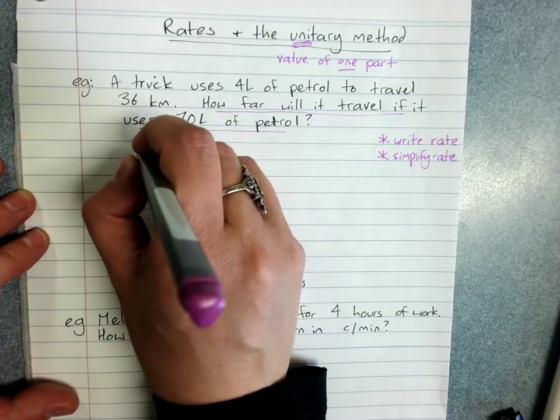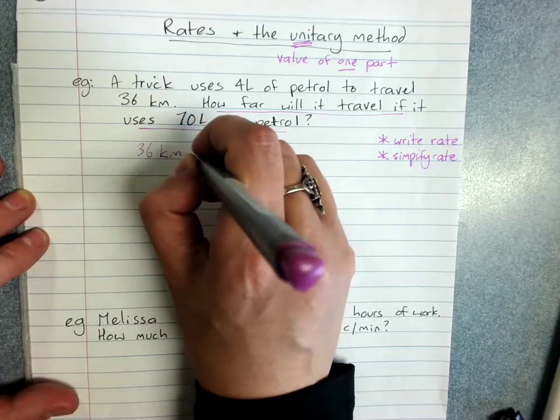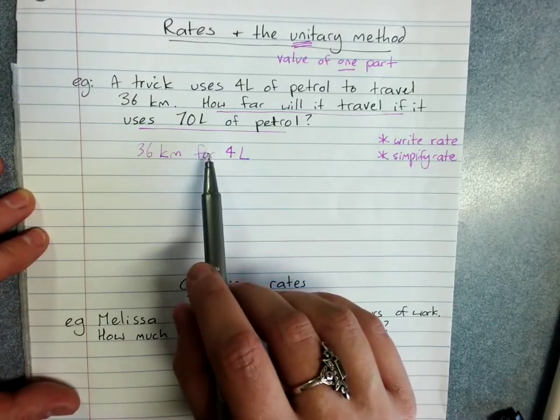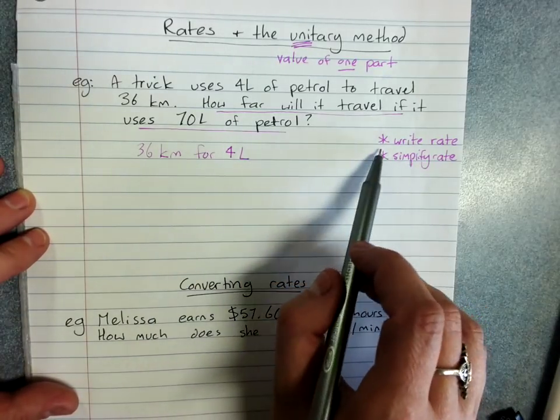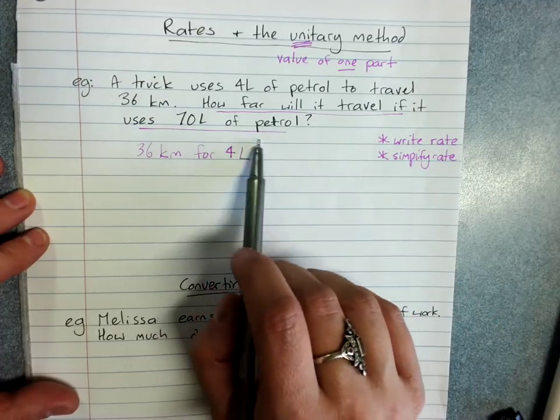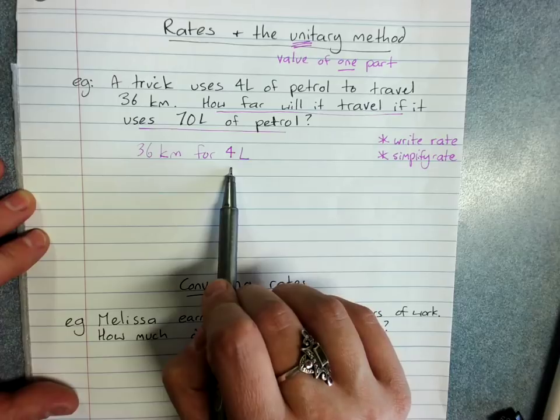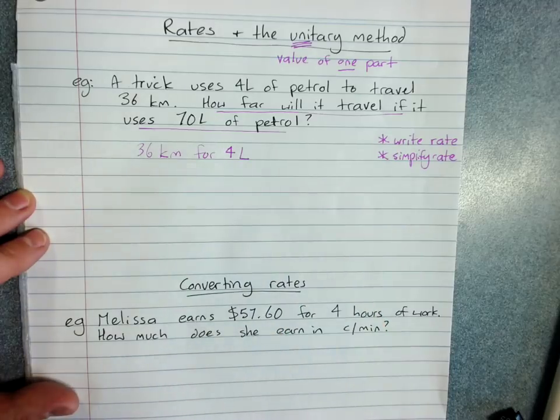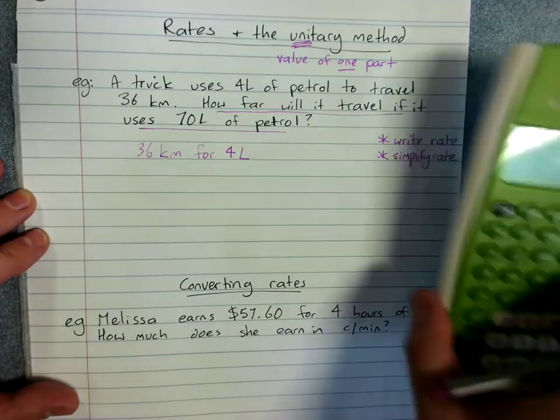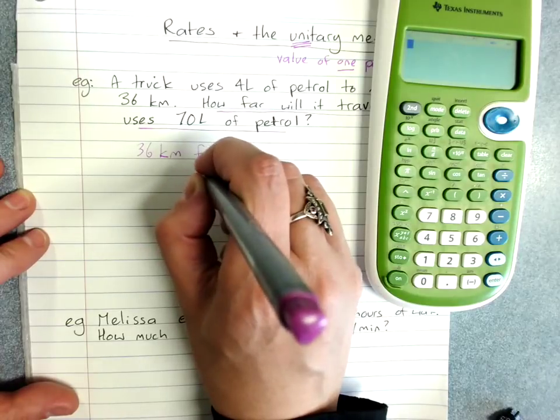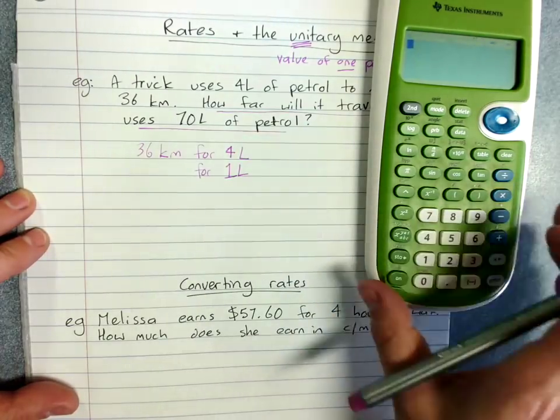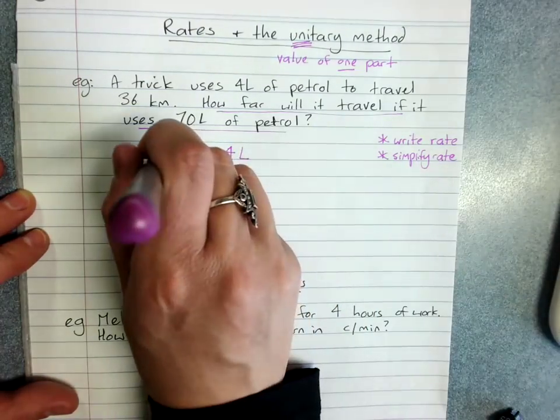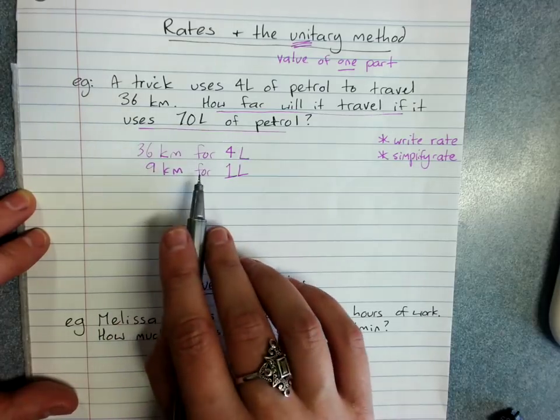So my rate is 36 kilometers for 4 liters. You write your rate and you simplify your rate because I want to get down to one liter and how far that is. So of course to simplify your rate, you remember we divide by our four over here that will get me down to one liter here. And if you need your calculator you're welcome to grab that. 36 divided by 4 is 9. 9 kilometers for one liter or from one liter perhaps is a better word.